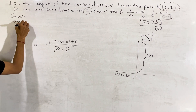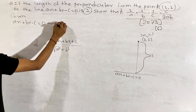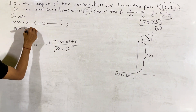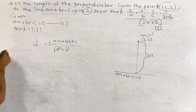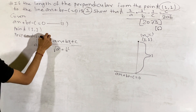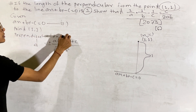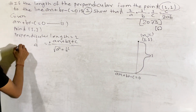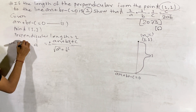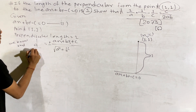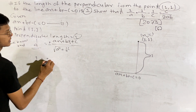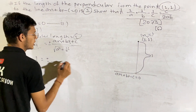We have the line equation Ax plus By minus C equal to 0. I have the point (1, 1) and I have the perpendicular length. We know that the perpendicular distance from the point to the line is 1 meter, with coordinates x1 and y1.